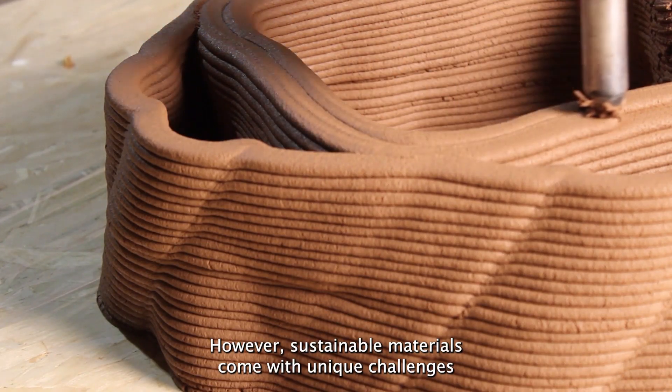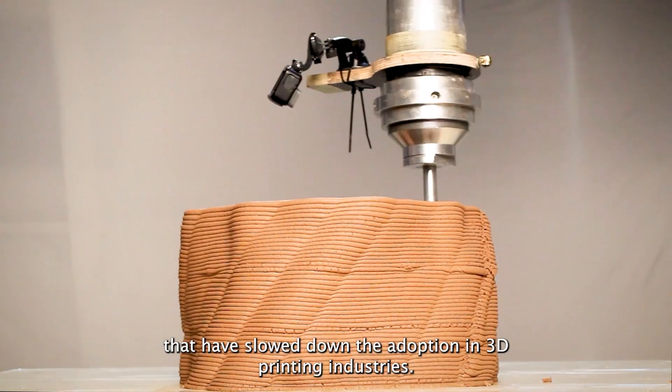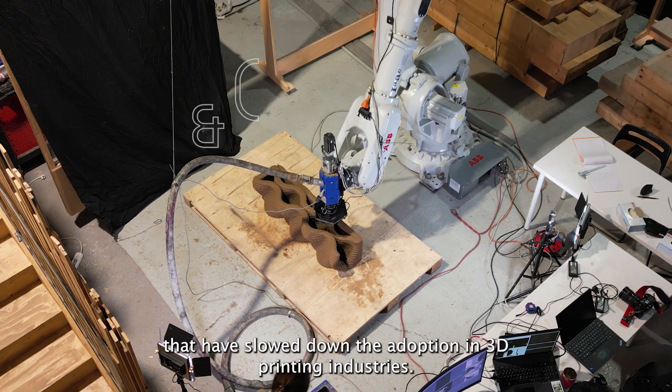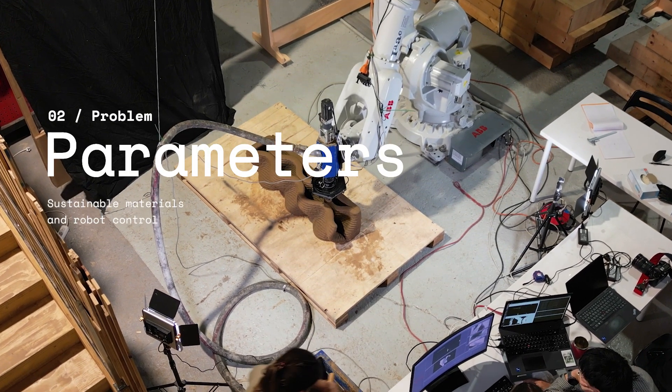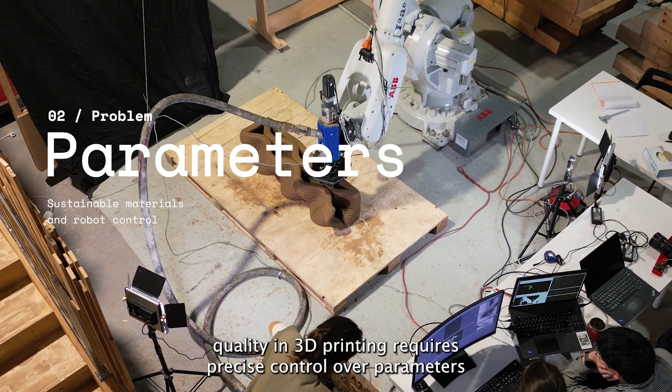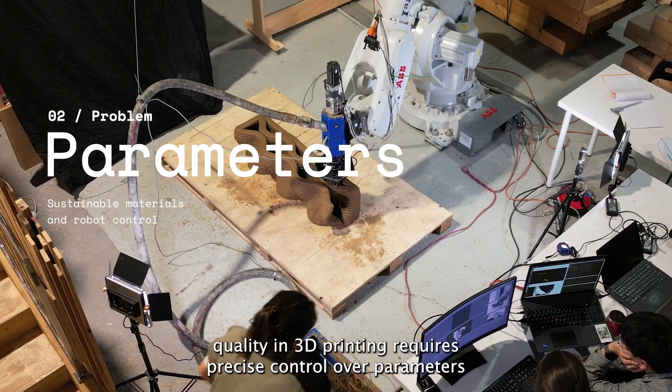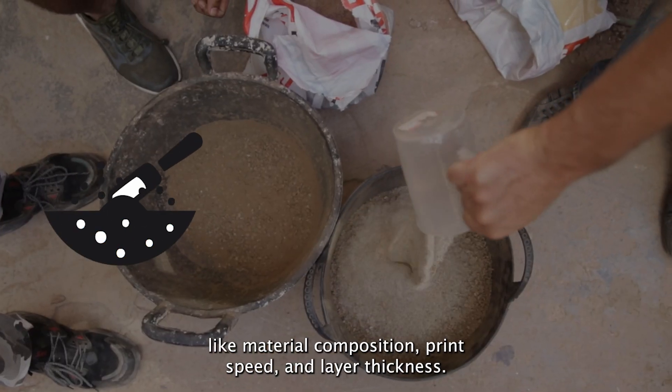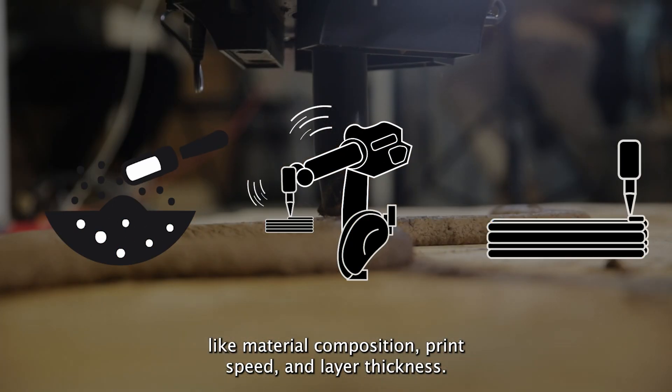However, sustainable materials come with unique challenges that have slowed down adoption in 3D printing industries. Achieving consistent quality requires precise control over parameters like material composition, print speed and layer thickness.